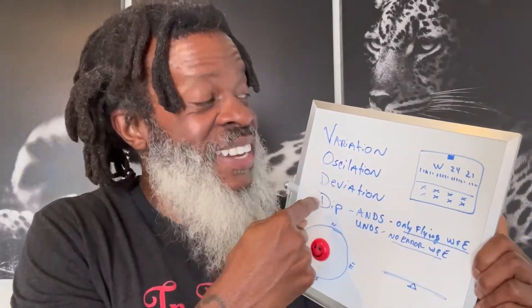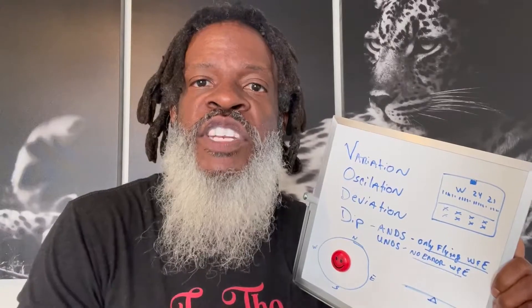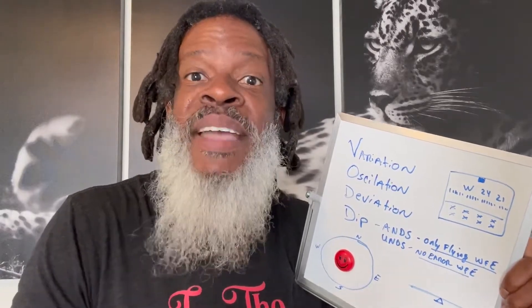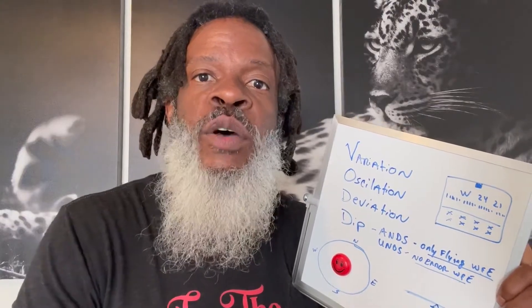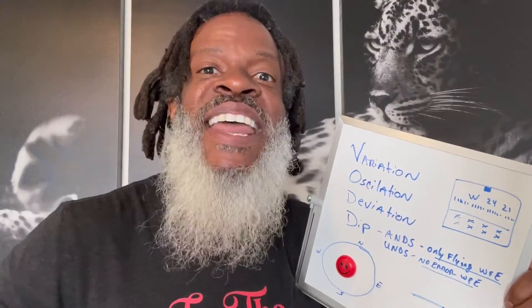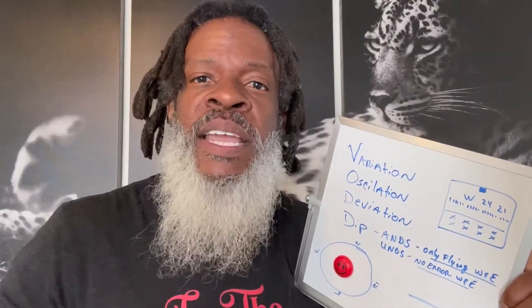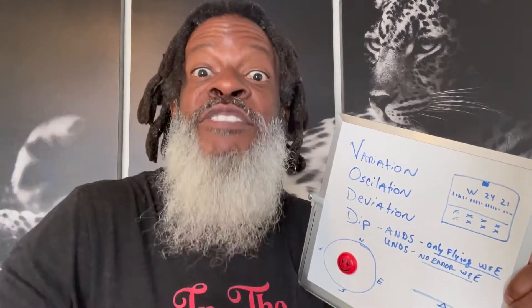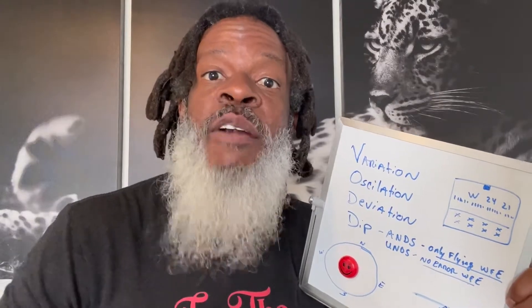VOID stands for: Variation, Isolation, Deviation, and Dips. Let's start at the very top — Variation. That's simply the difference between true north and magnetic north, which we already covered. They will never be the same; there's always going to be a difference. Your compass is operating off of magnetic north, which is different from true north, so when you do flight planning you'll have to calculate the variation between the two. Understanding that variation is understanding one of your compass errors.